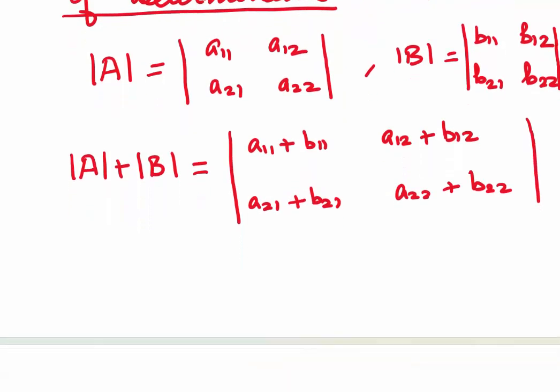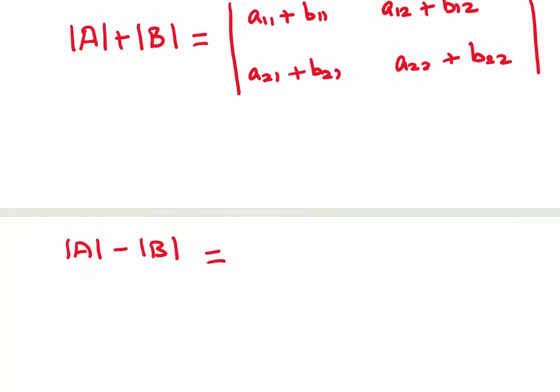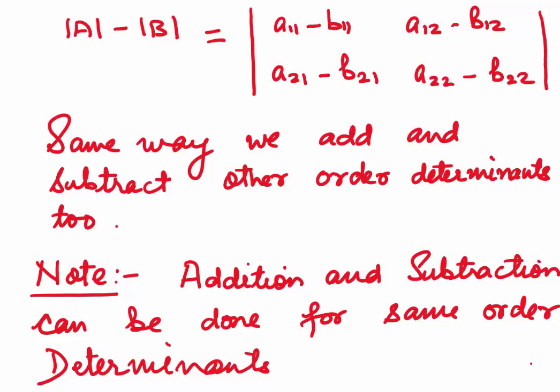For subtraction, if we want to find the difference of two determinants, we will subtract the corresponding elements. So this would be A11 minus B11, A12 minus B12, A21 minus B21, A22 minus B22. Remember, addition and subtraction can only be done between determinants if they are of the same order.